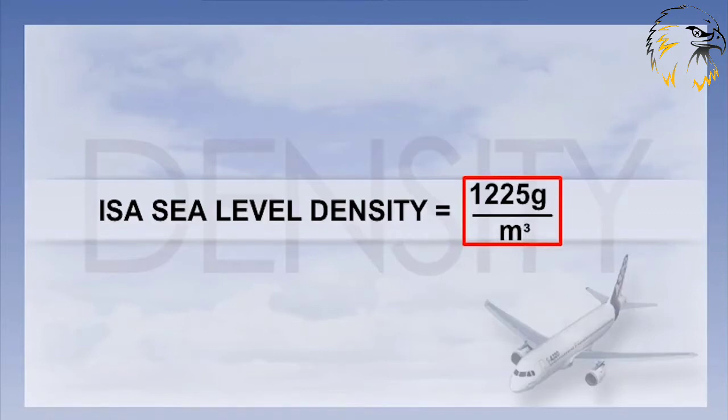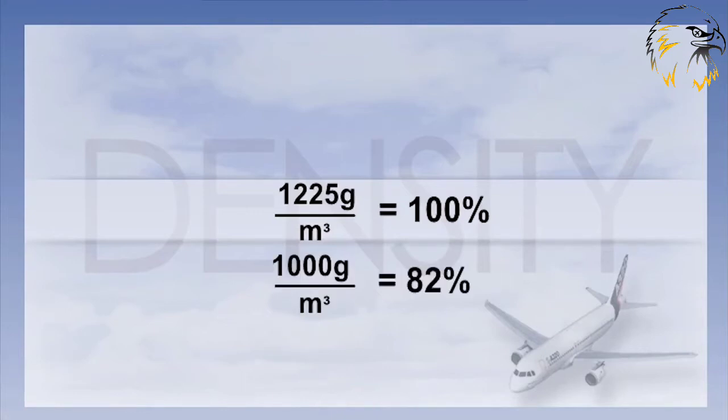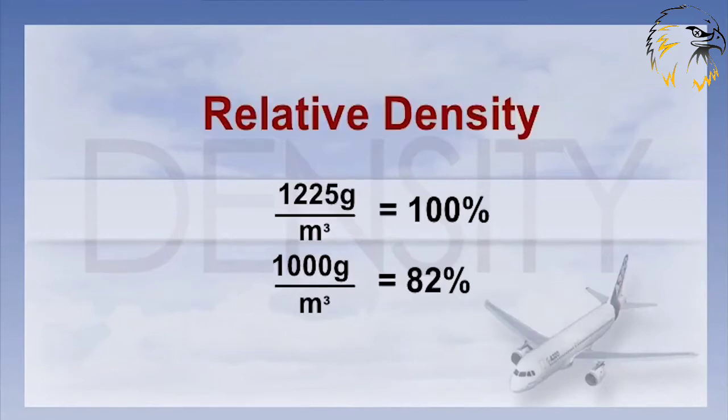However, there are other ways in which density can be expressed. If we know the standard sea level density in ISA, then we can use this as a benchmark to compare densities from other areas. So we take the density of 1225 grams per cubic meter as 100%. If another area has a density of only 1000 grams per cubic meter, then this density is approximately 82% of the ISA surface density. We call this expression of density relative density. We are comparing the density in one area relative to the density in ISA at sea level.